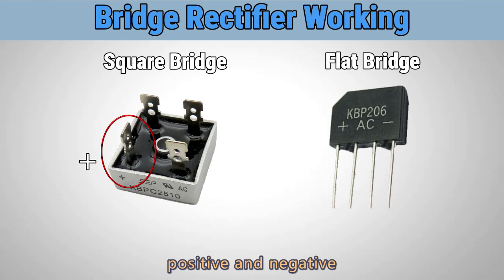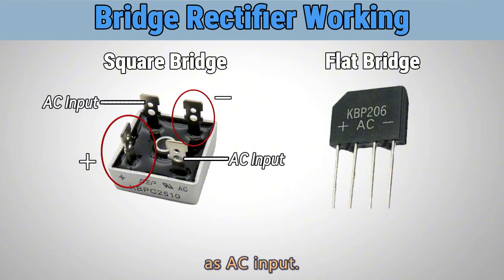Differentiating between positive and negative terminals, the square bridge has its positive pin positioned differently from the other pins, with diagonal pins serving as the negative terminal and the remaining two as AC input.